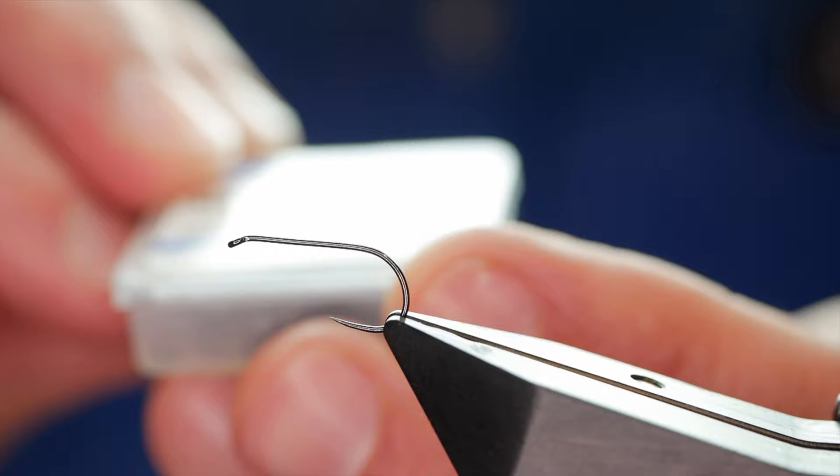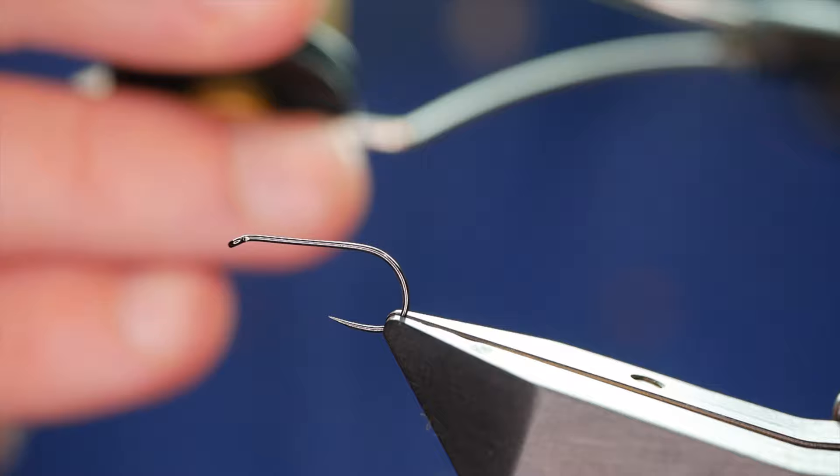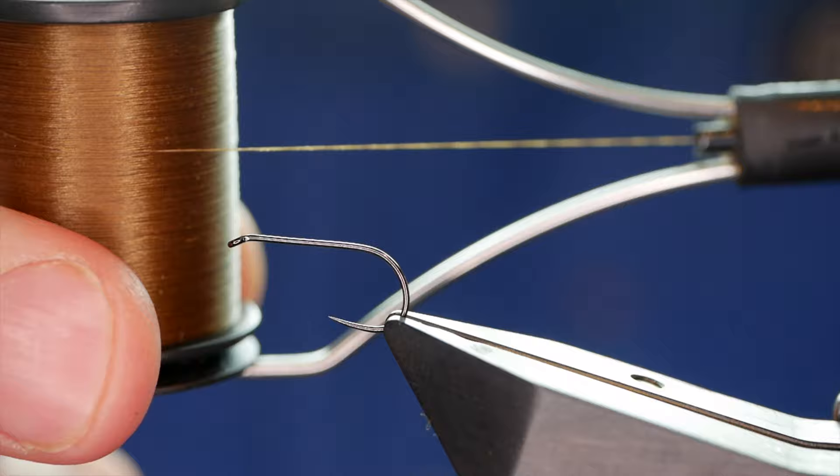The hook in the vise is a Hanak H 130 barbless hook. This one's at size 10. It's on a fine wire and it's finished in black nickel. The thread I'm going to be using today is from Semplify. This is classic wax thread at 8/0. As you can see, it's brown.